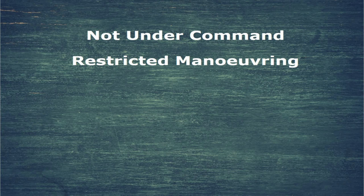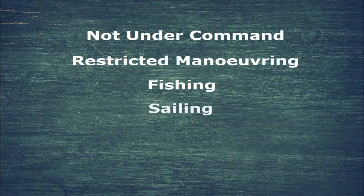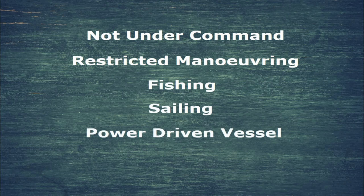So if a vessel has to get out of the way of a not under command, the next one down would be a fishing vessel, followed by a sailing vessel, followed by a power-driven vessel — with a power-driven vessel having to keep out of everyone's way, as seen in paragraph A.